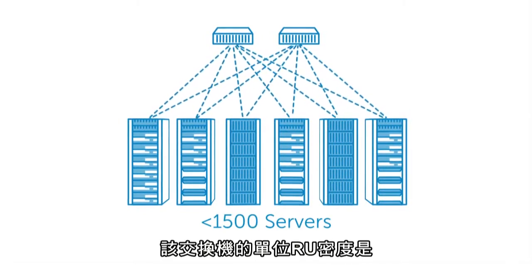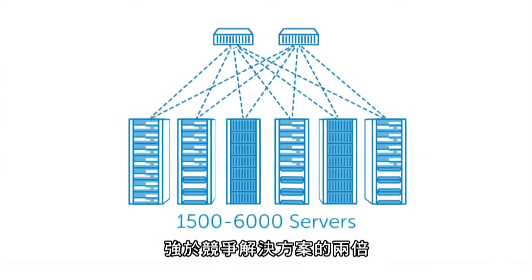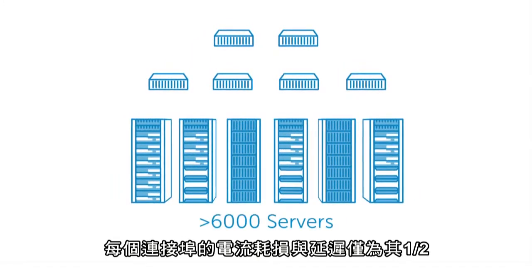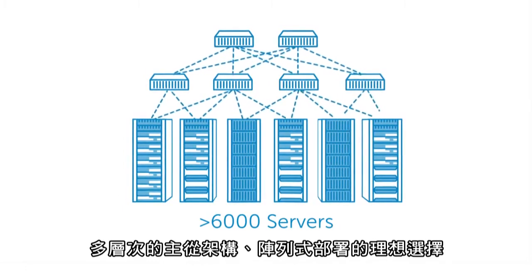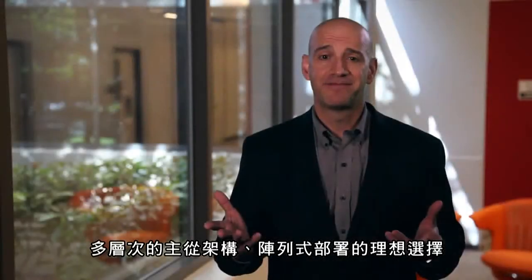It provides up to twice the density per RU, half the power consumption per port, and up to half the latency compared to competitive solutions. This makes it ideal for leaf spine, collapsed leaf spine, or end-of-row deployments. This extreme density enables smaller data center footprints and higher density racks to help reduce your total cost of ownership.